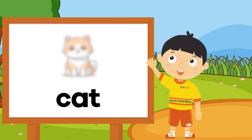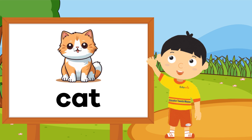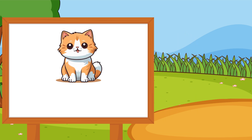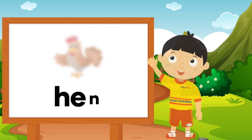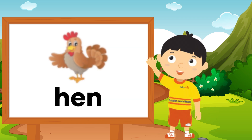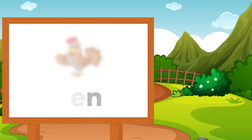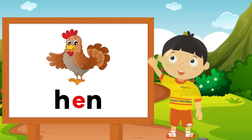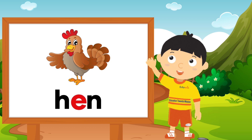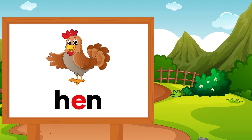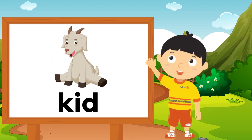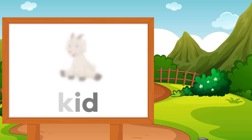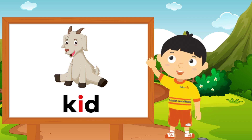C, L, T — cat. Here, A is a vowel. H, E, N — hen. Here, E is a vowel. K, I, D — kids. Here, I is a vowel.